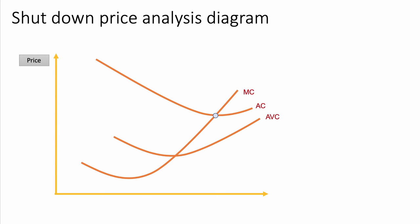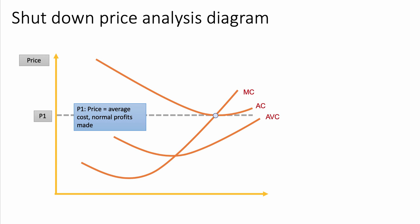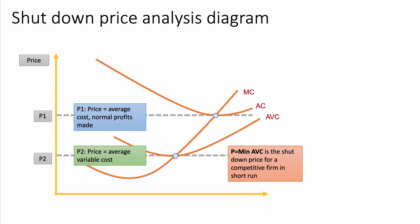Now let's build the analysis with a diagram using the example of perfect competition. Here are our cost curves. At price P1, which would be the average and marginal revenue curve in perfect competition, the firm just covers all costs at the minimum point of average cost - this is normal profit. At the lower price P2, the firm can just cover average variable cost, and that is the shutdown point. If price falls below P2, the firm should shut down, as losses would be even greater if production continues.